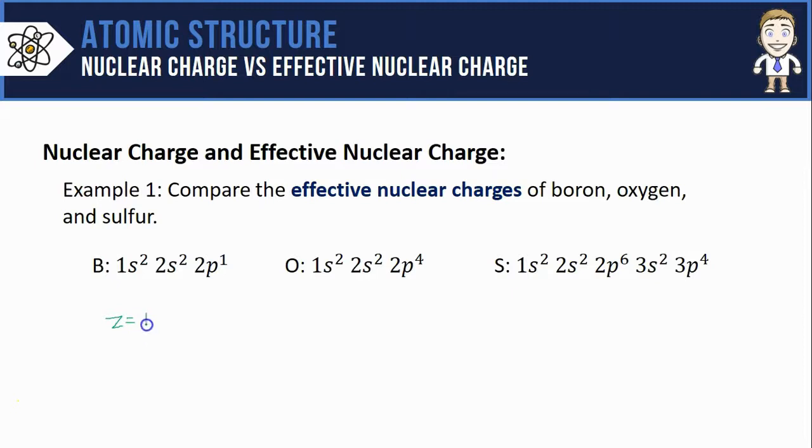And so we don't forget, let's label each of those nuclear charges beneath the configuration. Here's boron plus 5, oxygen's plus 8, and sulfur's plus 16. So now I know how positive each nucleus is.